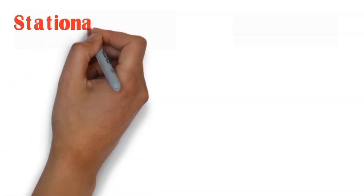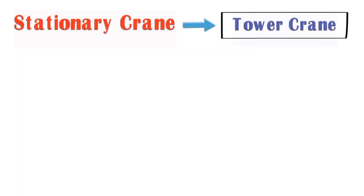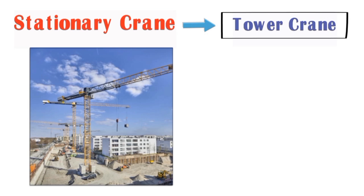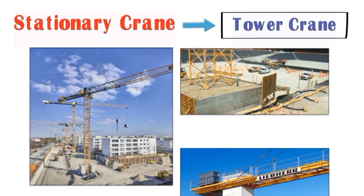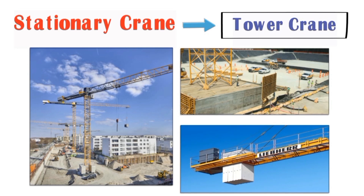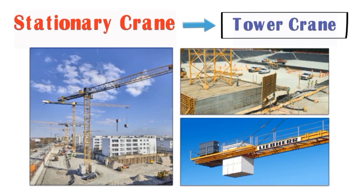Now let's talk about stationary cranes. The first is the tower crane, as you can see in the picture. Tower crane is mainly used at construction of high rise buildings. It is divided into two parts: vertical and horizontal. The vertical part is fixed in concrete, and the horizontal part has a boom on the front side, with a concrete counterweight attached at the back side to balance the crane and load.